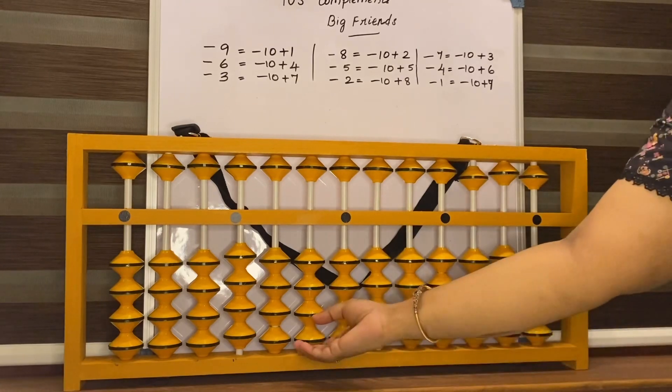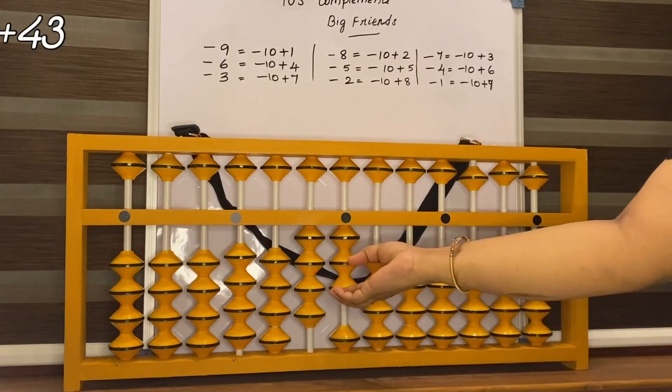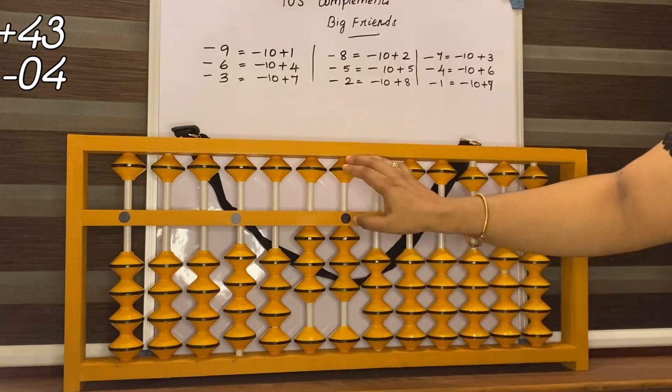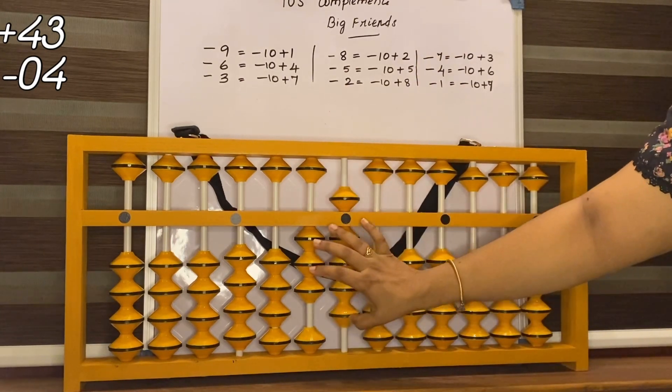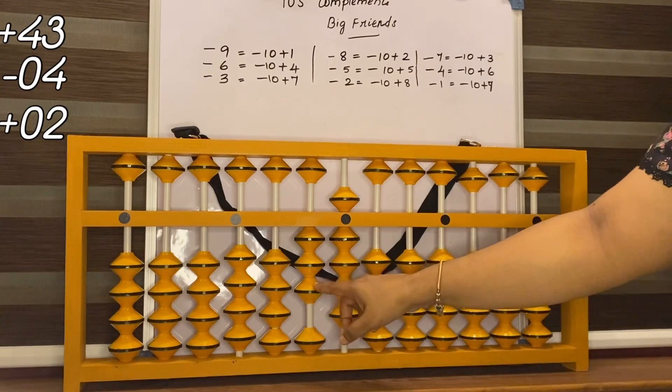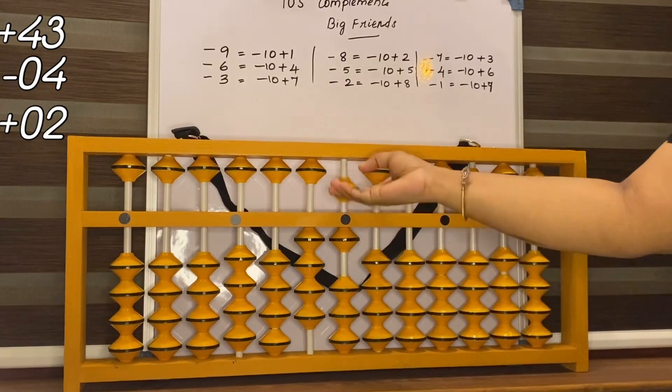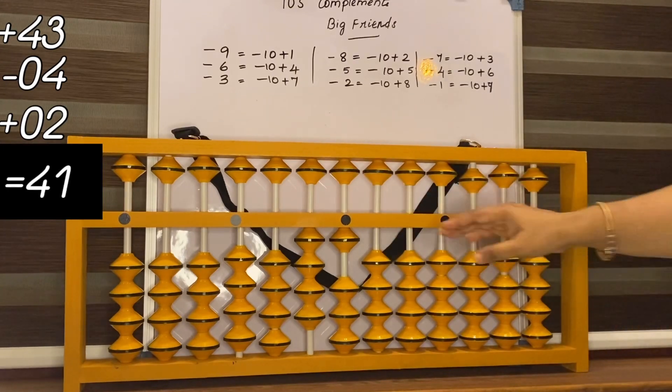Set 0. 43, 3. Less 4. Less 10, add his friend 6. 2. How to add 2? Add 10, less 8. Answer is 41.